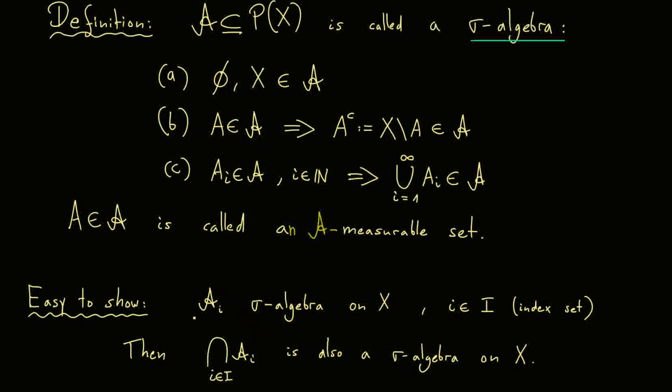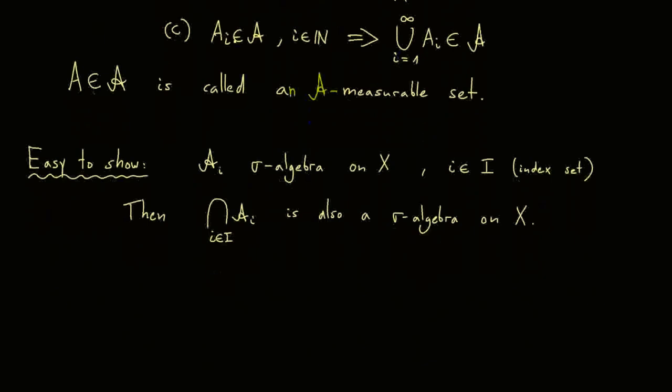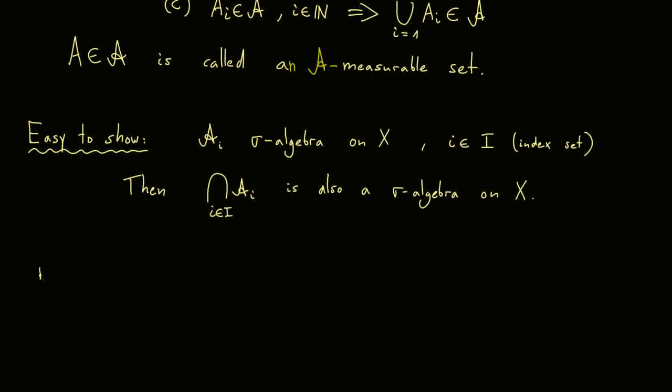It does not matter if you look at the intersection of two sigma algebras or of a lot of sigma algebras — you still get a new, smaller sigma algebra on our set X. This result is very helpful if you want measurable sets to have a lot of properties: you can put the properties into different A_i's and then form the intersection to get a sigma algebra where all your measurable sets have all the properties. In short, this result helps you a lot if you want to define a suitable sigma algebra for your problem.